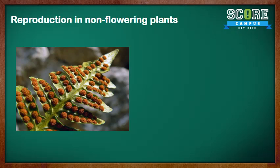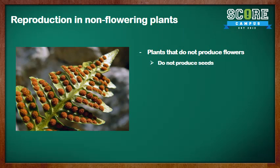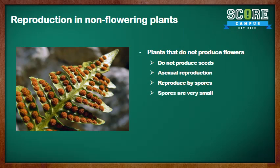Lastly, reproduction in non-flowering plants. These are plants that do not produce flowers, like the bird's nest fern, and so they do not produce seeds. To reproduce, they go through asexual reproduction and reproduce by spores. Spores are very small and are found on the underside of the leaves. Once the spore bags are ripe, the spores are dispersed and can grow into a new plant.